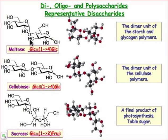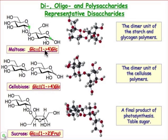You can see that basic structure of the disaccharides — many of them are common to you, such as maltose, cellobiose, which is the building block of cellulose, and sucrose. Basically what we're talking about is 2 monosaccharides that are joined together by this glycosidic bond.